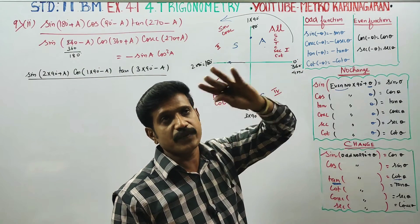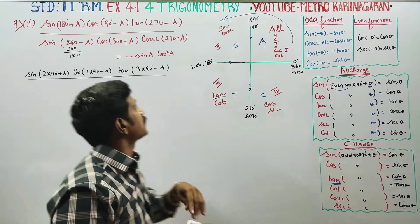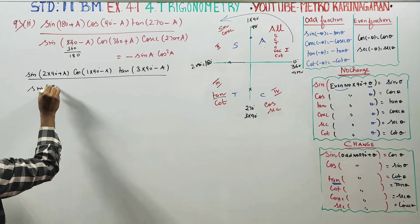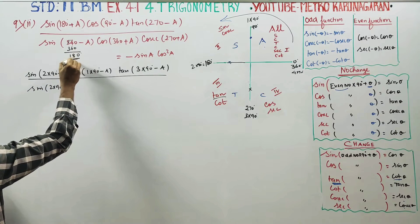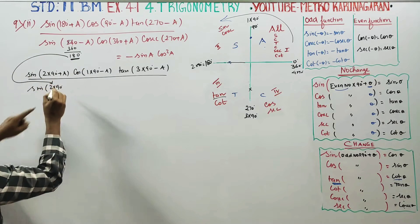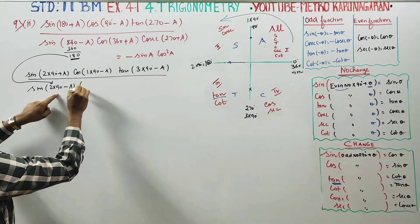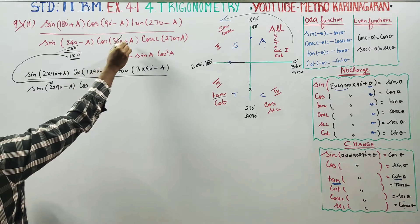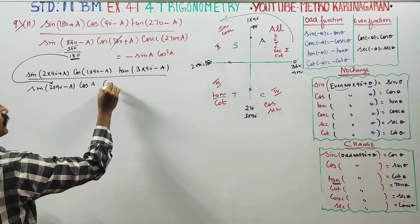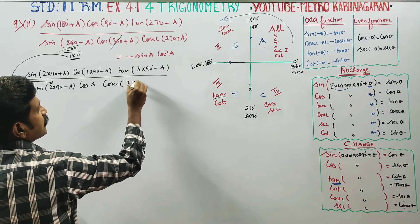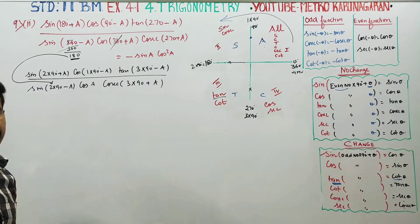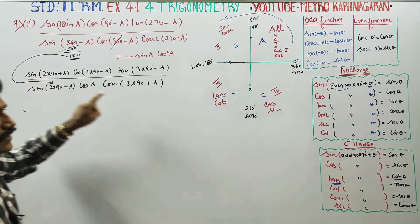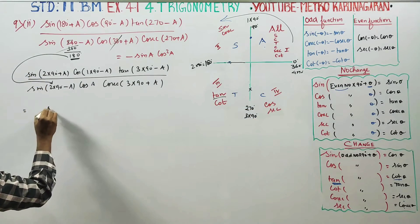That means if you are 360, you will be 0. This is step 1. Step 2: even number is no change. That means the sign is the angle.